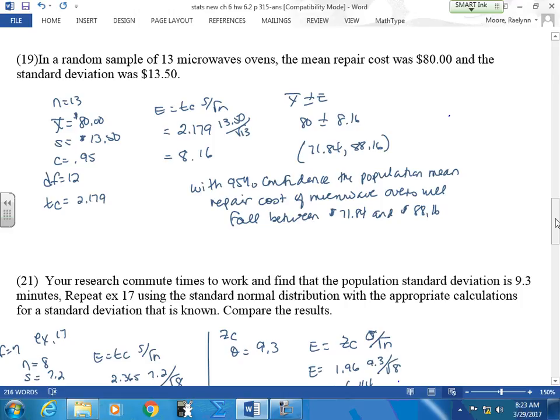Okay. So here's your microwaves. Again, find your TC. Use your statement. I want to be 95% confident that the population mean repair cost of microwave ovens will fall between $71.84 and $88.16. If I give myself an interval, it's far better than saying it's going to fall at $80. Good.